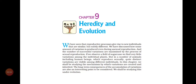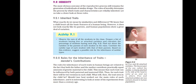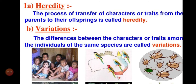Good morning children. We are in the heredity and evolution chapter. We have learned about the technical terms, and accumulations can be seen even in asexual reproduction but only at a low level. We have learned about inherited traits and acquired traits. The definition for heredity is: the process of transfer of characters or traits from the parents to their offspring. Variation is defined as the differences between the characters or traits among individuals of the same species.